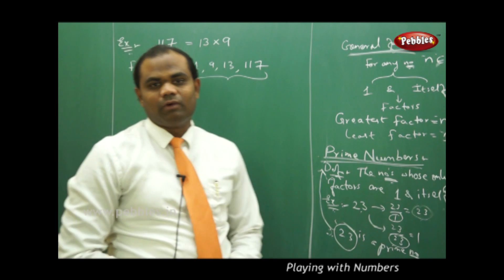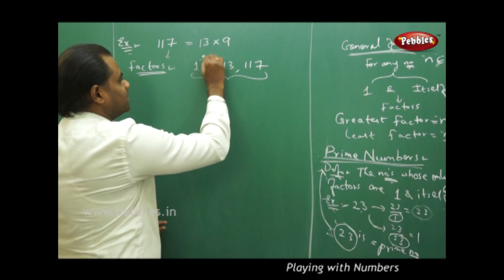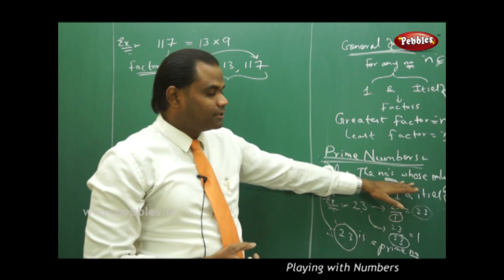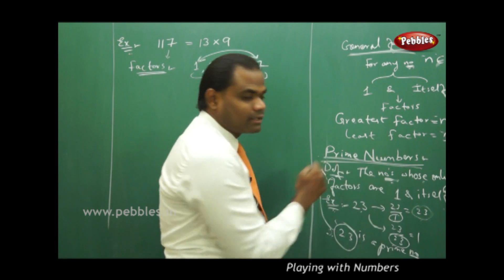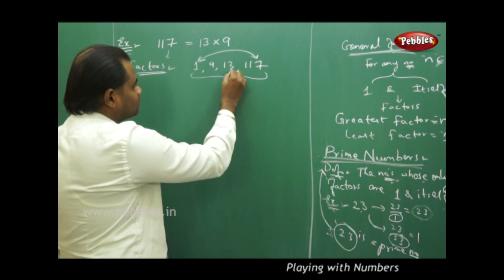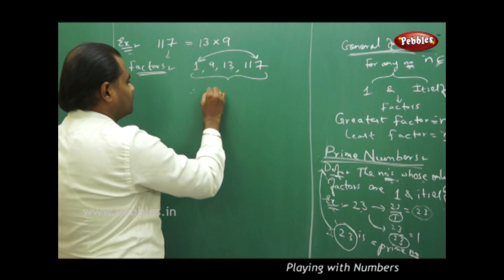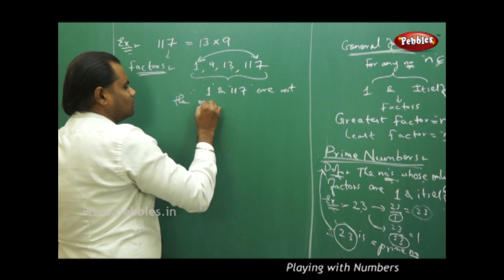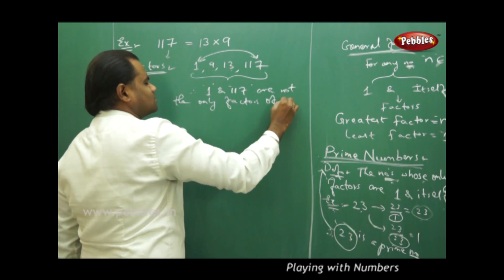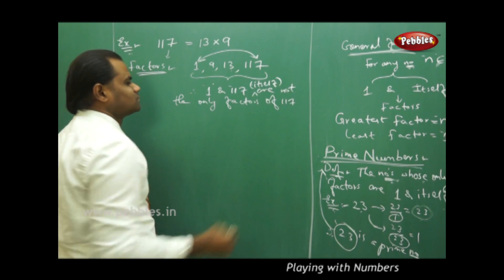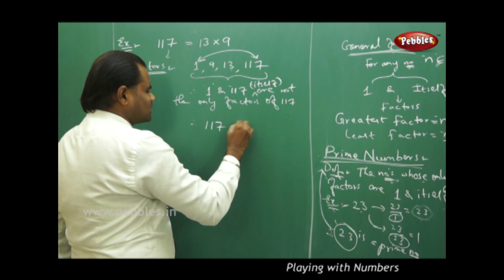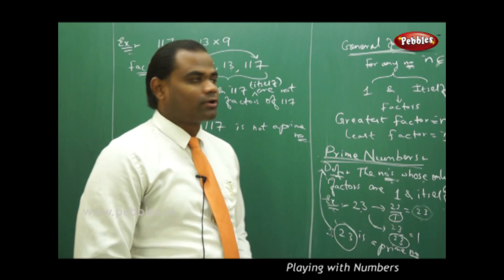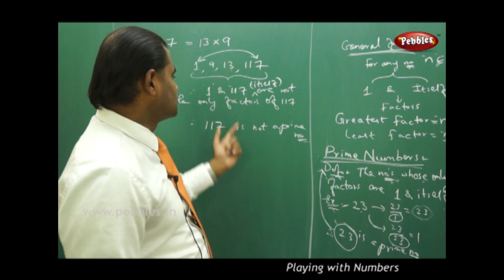These are the factors for 117. As we know, 1 and itself are the basic trivial factors which exist for every number. But because there are other factors — 9 and 13 — the definition clearly says that numbers whose only factors are 1 and itself are prime numbers. Since 9 and 13 are also factors of 117, then 1 and 117 are not the only factors, therefore 117 is not a prime number. A prime number cannot be expressed as a product of two different non-trivial factors, but 117 can be, so it is not a prime number.